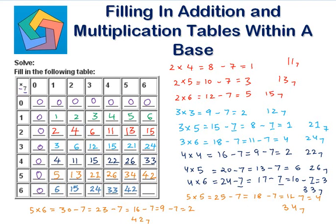6 times 6 is 36. 36 minus 7 is 29, 29 minus 7 is 22, 22 minus 7 is 15, 15 minus 7 is 8, and 8 minus 7 is 1. Subtracting 7 five times, so this is 51 to the base 7. This is how we complete the multiplication table.